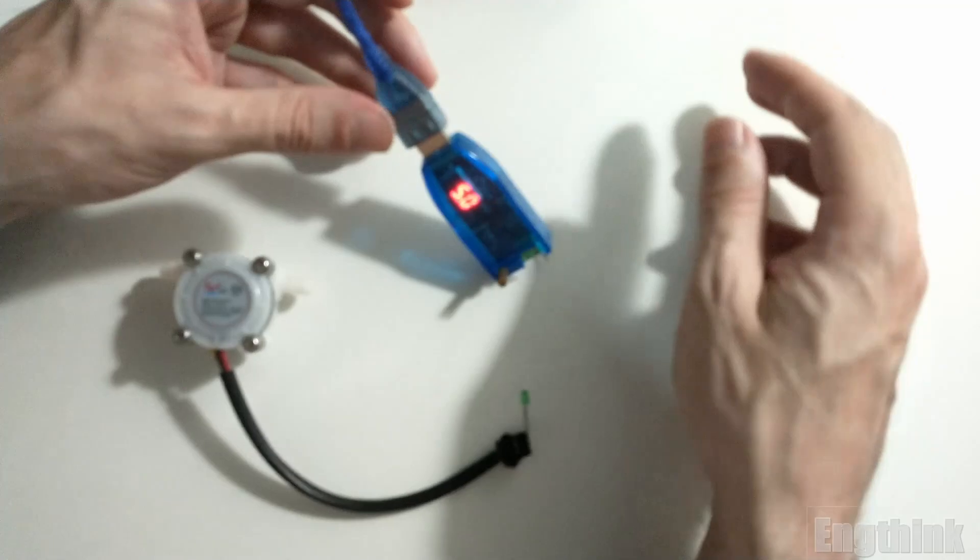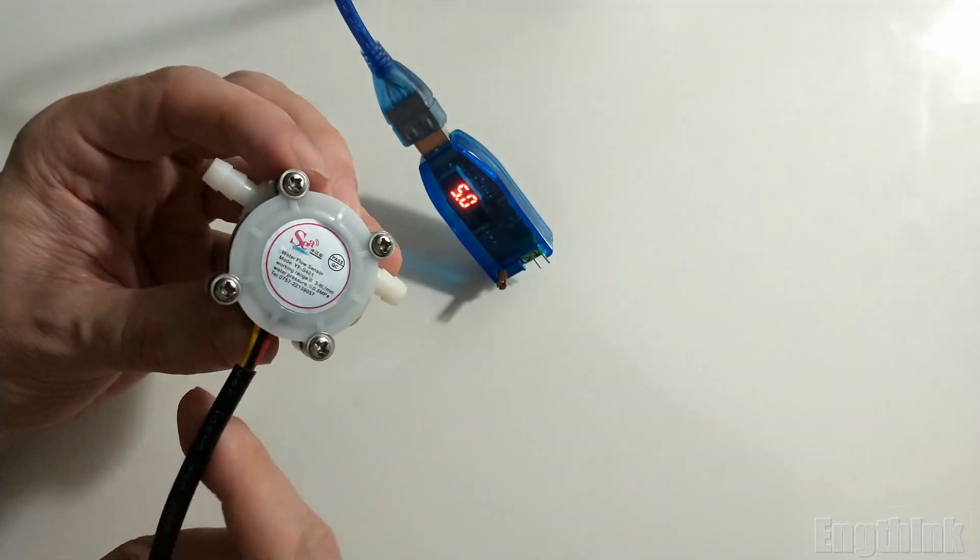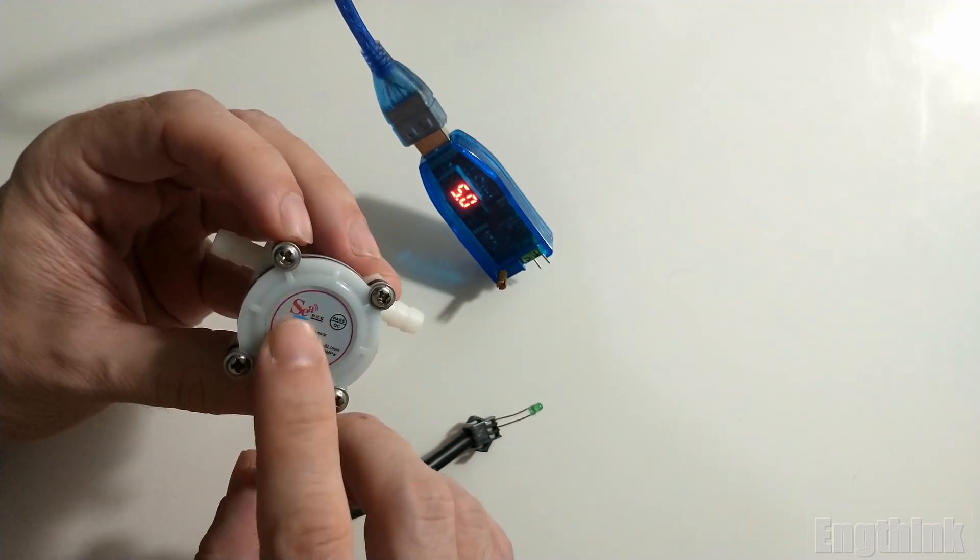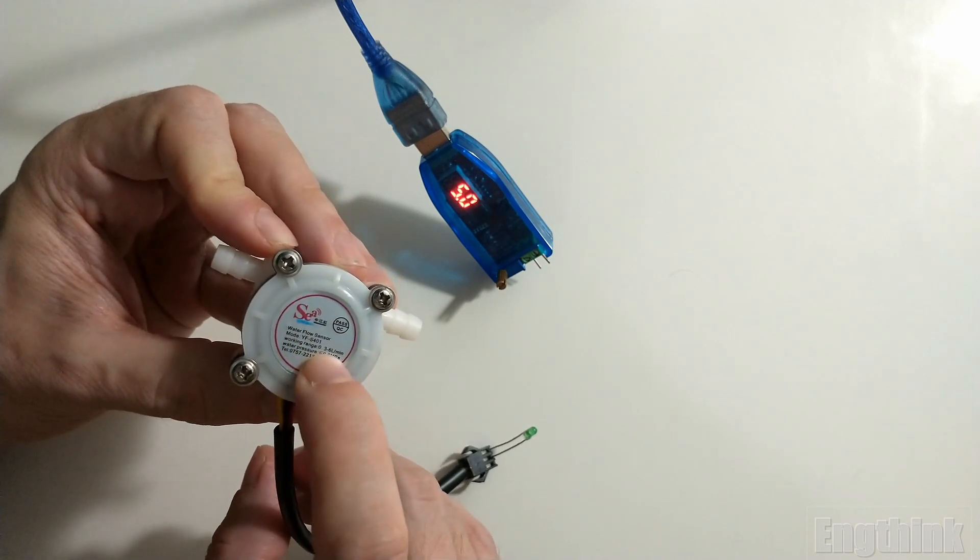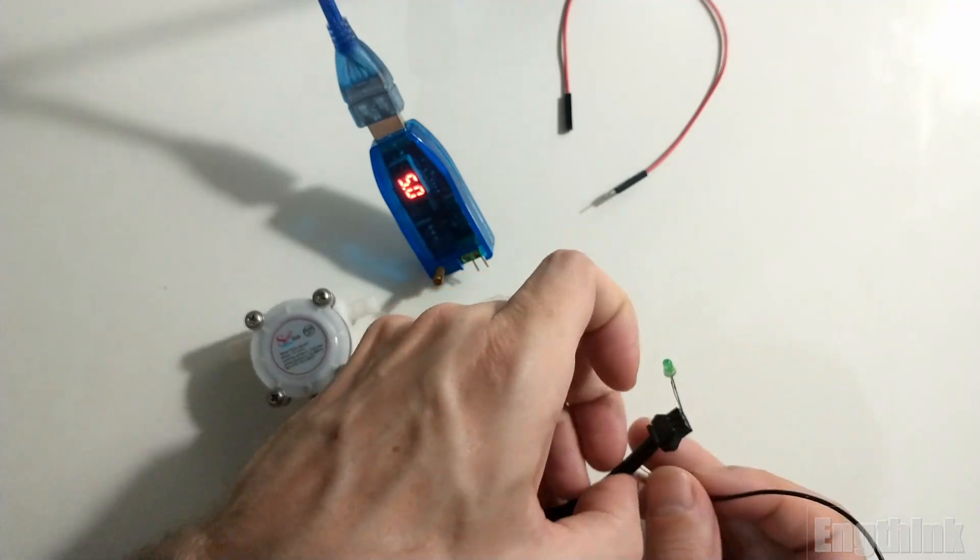Connecting the DC/DC converter, let's adjust it to 5 volts DC. I want to emphasize that the voltage range is on the label of the flow sensor. As we can see, it's between 4.5 and 24 volts DC.